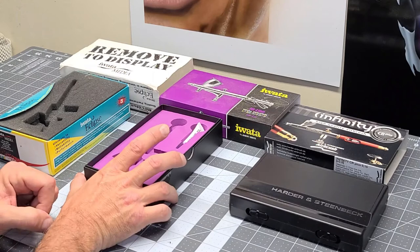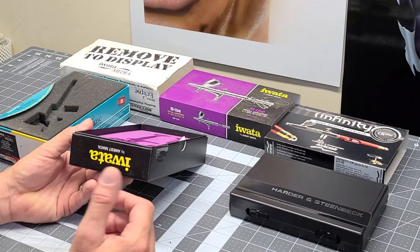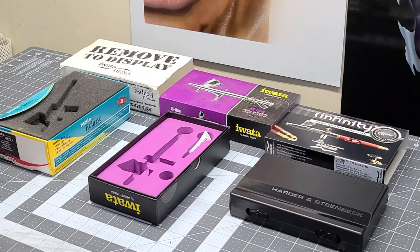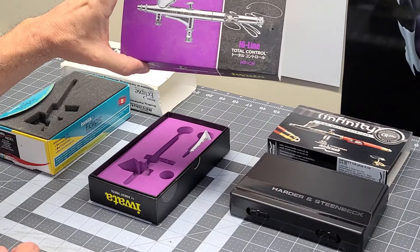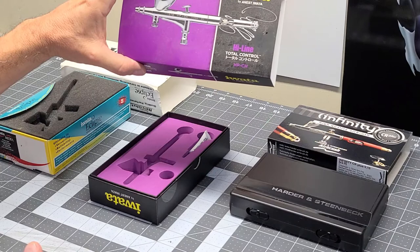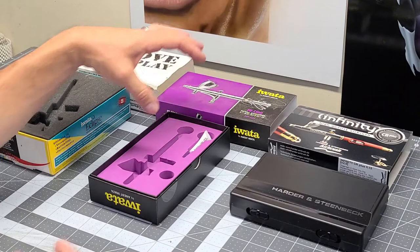The next one that I just purchased a couple years ago is the Iwata Highline HP-CH. That one has a MAC valve on it, and I'll be showing you that when we break the brushes down, which allows you to adjust the air at the front of the gun. It looks like a micron, but it's not a micron. It's kind of middle of the road.